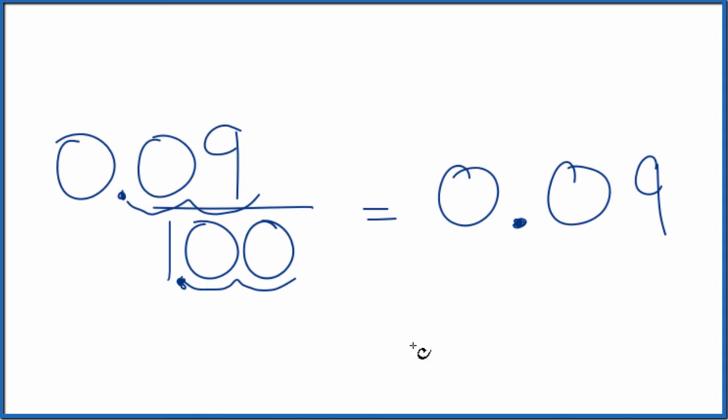And we can see that we get the same answer. 0.09 over 1, that's just 0.09, since we're dividing by 1.